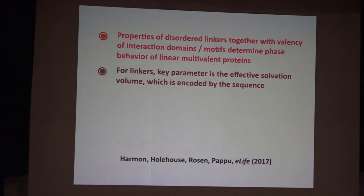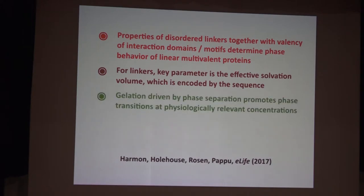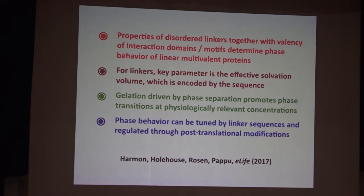For linkers, the key parameter is the effective solvation volume, which is nice because it's encoded directly by the amino acid sequence, and we can calculate this parameter directly from sequence by way of simulations. Gelation driven by phase separation promotes phase transitions at physiologically relevant concentrations because you need roughly two to three orders of magnitude smaller amounts of protein to drive phase separation this way. Because the effective solvation volume is tunable, post-translational modifications like phosphorylation will actually tune this parameter.